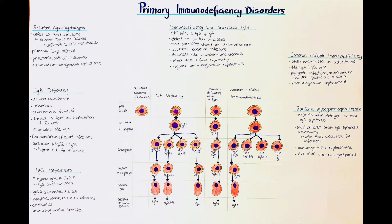Women can be carriers but are rarely really affected by the disease. The disease usually presents when an infant boy is a couple of months old. This is because in the first months of life the infant will have protection from maternal antibodies received before birth from their mother. Then when these antibodies fade as the first weeks to months pass, the infant gradually becomes more and more susceptible to infections.